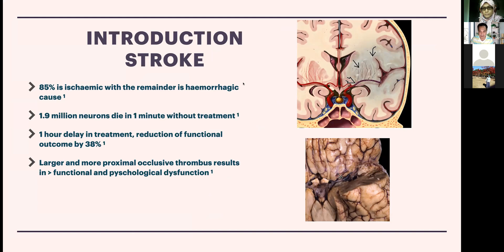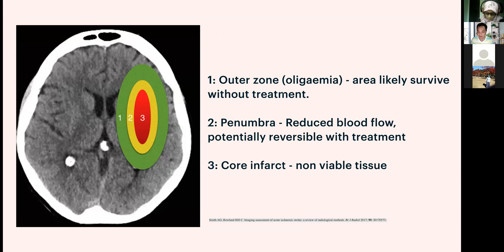Stroke is most of the time ischemic — about 85% of cases. 'Time is brain' — approximately two million cells die every minute without treatment, and delay leads to 88% worse functional outcomes. A larger infarct leads to worse outcome. A proximal occlusive thrombus, for example at the ICA, will cause more harm than a distal thrombus because of the larger area of brain affected.